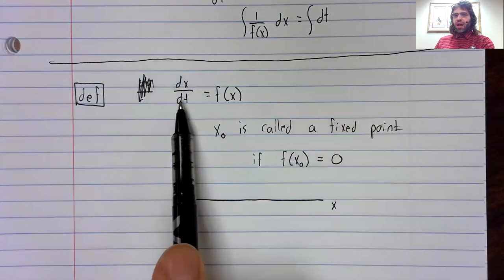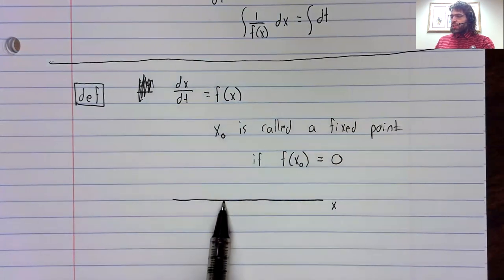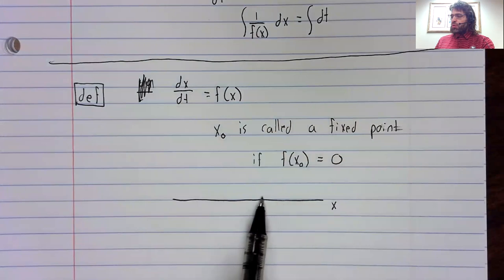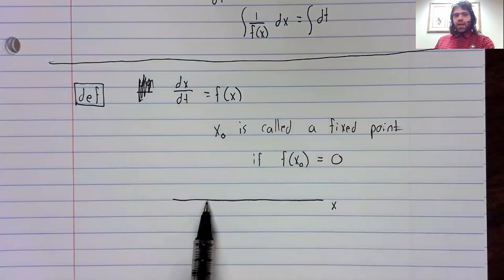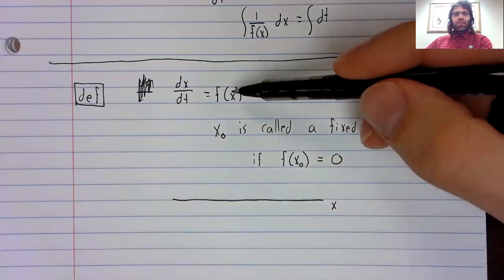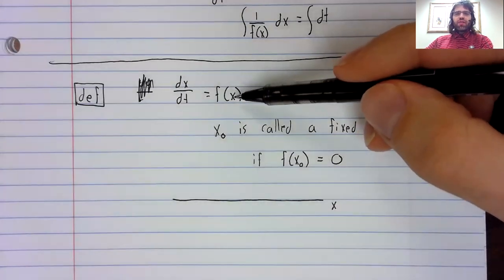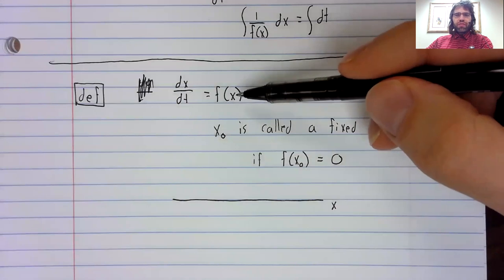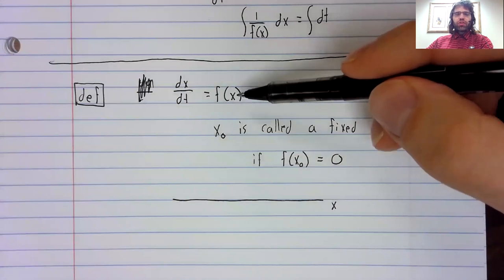And as time passes, we go up or down the number line. And how we move up or down the number line depends on f(x). Because f(x) is the derivative. It's the rate of change.